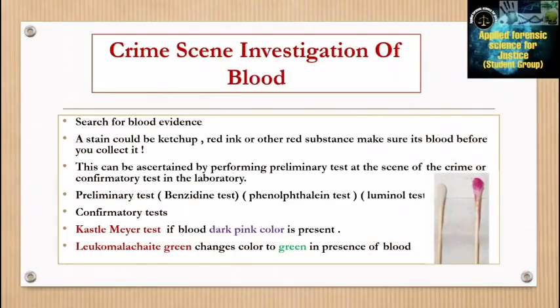What is the blood group, and can paternity be established by blood test? When searching for blood evidence at a crime scene, a stain could be ketchup, red ink, or another red substance — make sure it is blood before you collect it. This can be confirmed by performing preliminary tests at the scene or confirmatory tests in the laboratory. Preliminary tests include the benzidine test, phenolphthalein test, and luminol test. Confirmatory tests include the Kastle-Meyer test; if blood is present, leucomalachite green changes color to green.